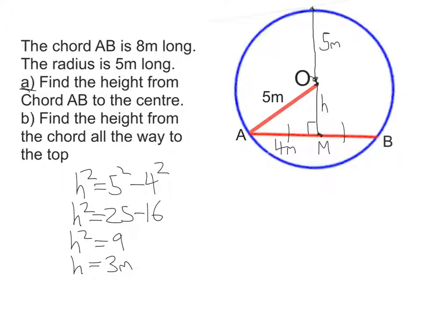So the distance all the way up here, let's call that X all the way up, is X is equal to my height I've just worked out plus 1 radius. So X is going to be equal to 3 plus 5. So our overall height is 8 meters.